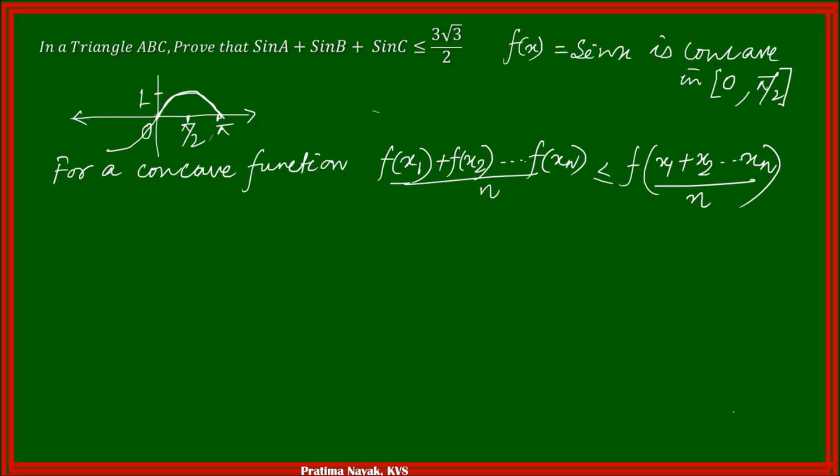So sin of A plus sin of B plus sin of C whole divided by 3. There are three elements here, so it's less than or equal to sin of A plus B plus C over 3. This gives sin 180 by 3, which is sin 60 degrees, which equals root 3 by 2.